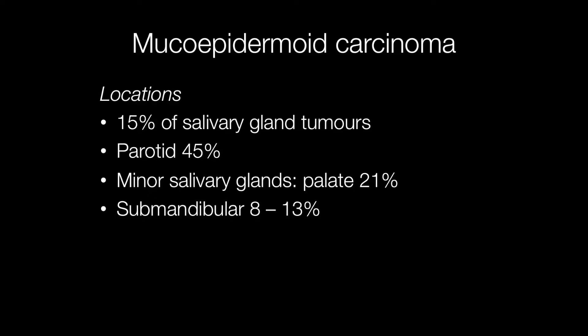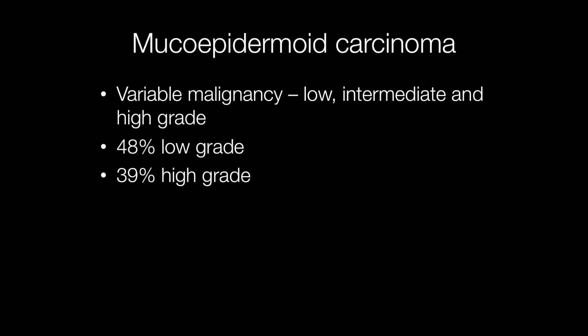The next most common location is in the minor salivary glands such as the palate, accounting for around 21% of mucoepidermoid carcinomas, and the next most frequent site is the submandibular gland, accounting for 8 to 13%. There is a continuum of malignancy with mucoepidermoid carcinomas ranging from low to intermediate to high grade tumours, with around half of them being low grade and slightly less being high grade tumours.